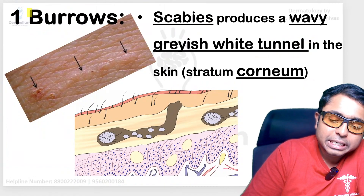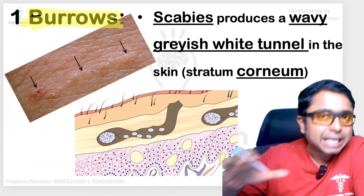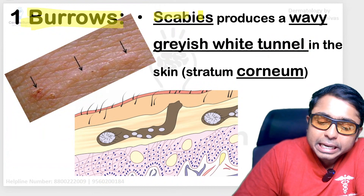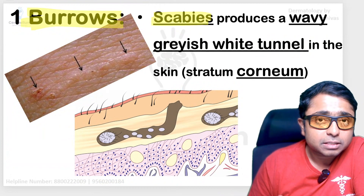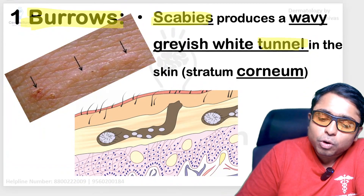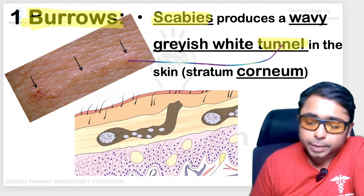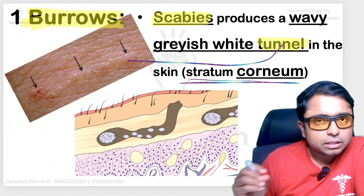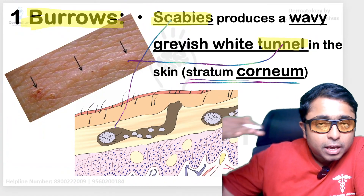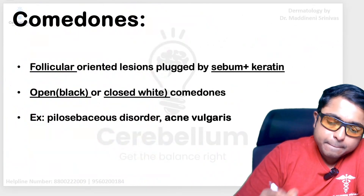Next are special lesions — these are lesions very characteristic of certain diseases. Burrows, comedones, and target lesions are the main ones. Burrows are seen in parasitic infestation due to scabies caused by Sarcoptes scabiei var. hominis. There will be small serpentine tunnels seen in the skin, and particularly they affect only the stratum corneum level. This is the scabetic mite making tunnels in the stratum corneum.